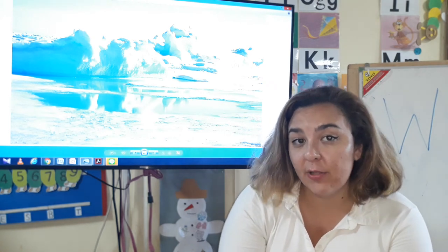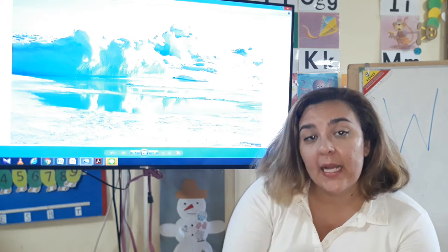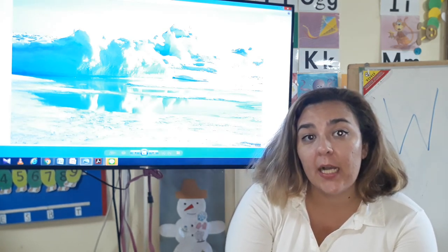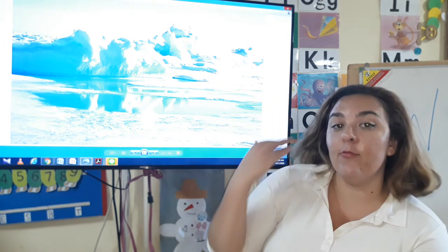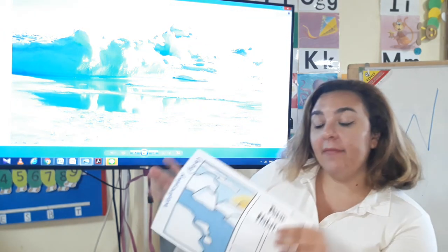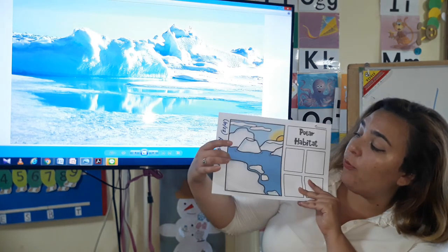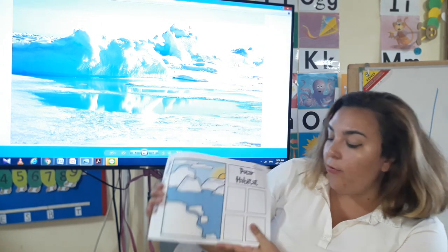The polar habitat can be the North Pole or the South Pole. Like Antarctica is in the South Pole. In the North Pole you have countries like Greenland, Russia, Iceland. The whole area is full of ice and water. You have this worksheet called Polar Habitats with a picture of water and ice on it.